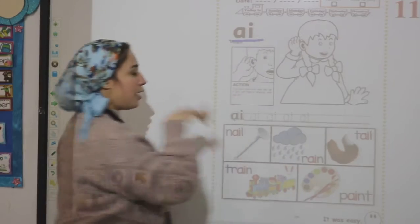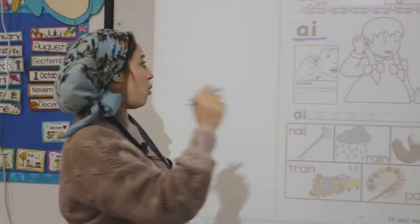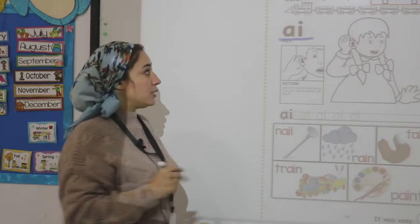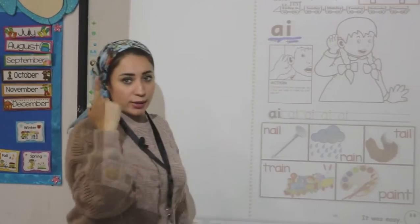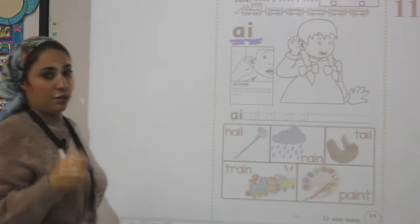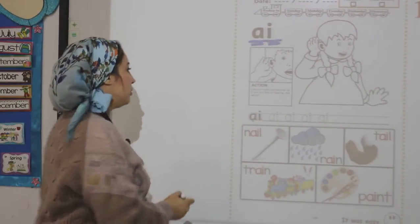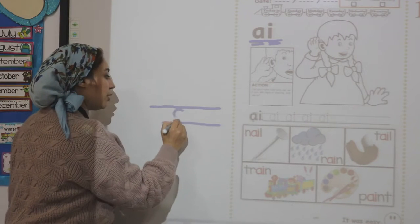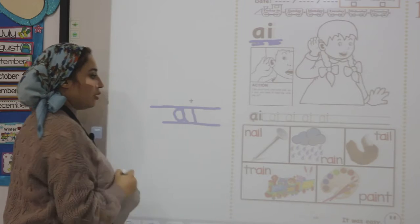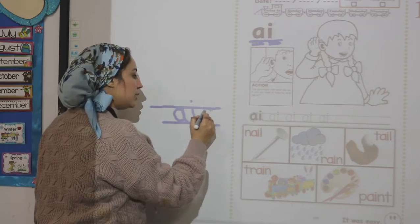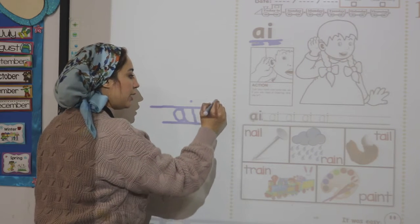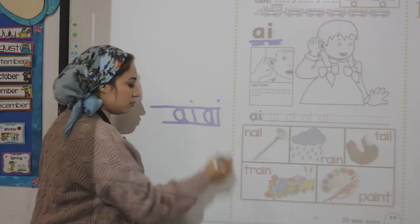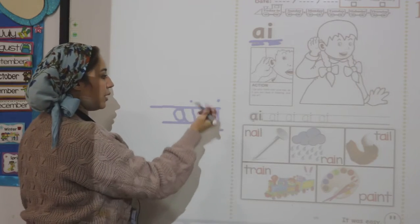Look at this sound: A. A is a digraph sound. Digraph sound means two letters make one sound. Two letters make one sound. How to write the A sound? We always write between two lines. Semi-circle up and down, down stick and dot. How to write sound A: semi-circle up and down, down stick and dot. A is a digraph sound — digraph sound means two letters make one sound.